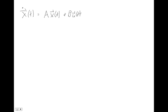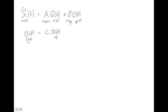We saw that if we have something like this, and X is an n by 1 thing, and A is an n by n matrix, U is a p by 1 vector, so B must be an n by p matrix. And then we're going to have some vector of outputs, let's say that's q by 1, and that equals some C matrix times our state vector. C must be q by n, plus D times our u vector, and D must be q by p.